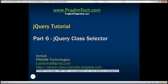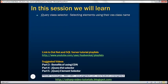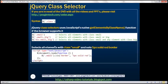This is part 6 of jQuery tutorial. In this video, we'll discuss jQuery class selector, that is, selecting elements using the CSS class name. Here is the syntax. To the jQuery dollar function, we pass the CSS class name with a dot in front of it and within quotes. So this is going to find all elements with that class name.